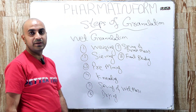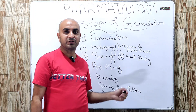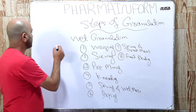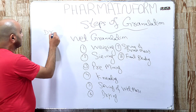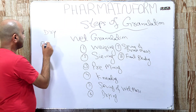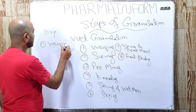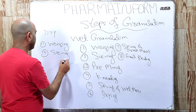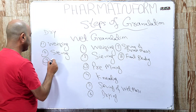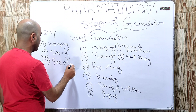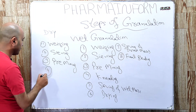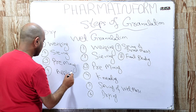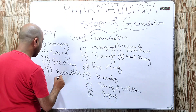These are all eight steps of wet granulation. Now we will discuss the steps of dry granulation. The first step is weighing, the second step is sieving, and the third step is premixing — same as in wet granulation. The difference comes at the fourth step, which is application of pressure.